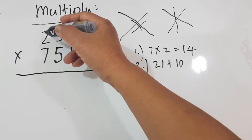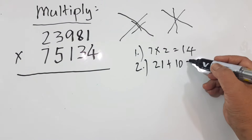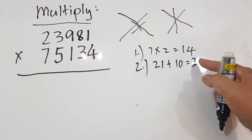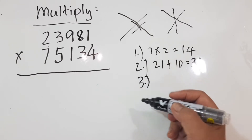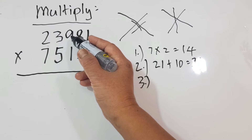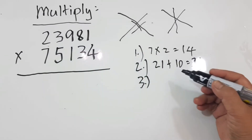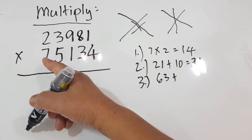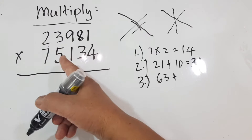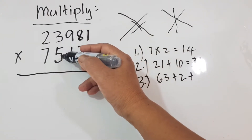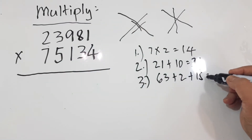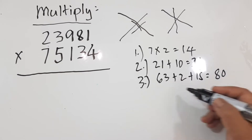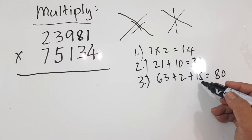7 times 3 is 21, and 5 times 2 is equal to 10, so this is equal to 31. Now the third step is to multiply: 7 times 9 is equal to 63, plus 2 times 1 is equal to 2, plus 3 times 5 is equal to 15. So we have 63 plus 2 is 65, plus 15 is equal to 80.